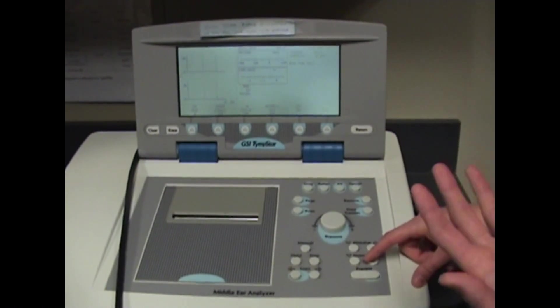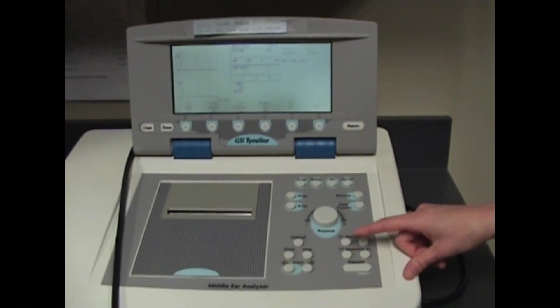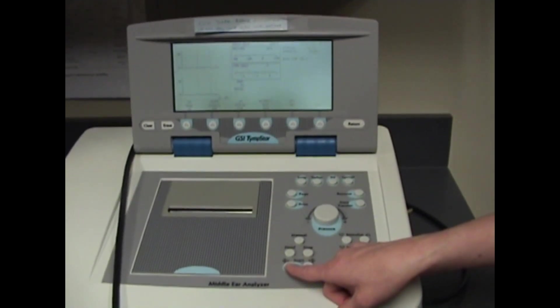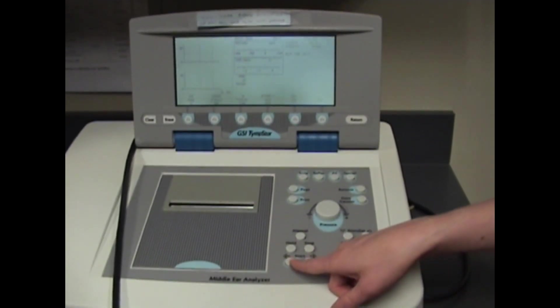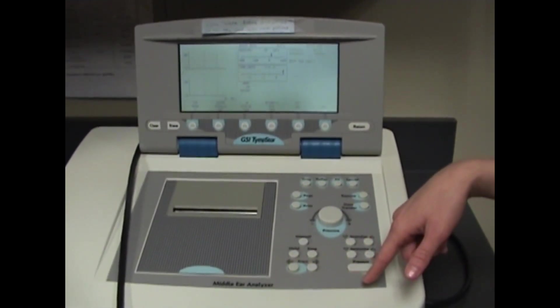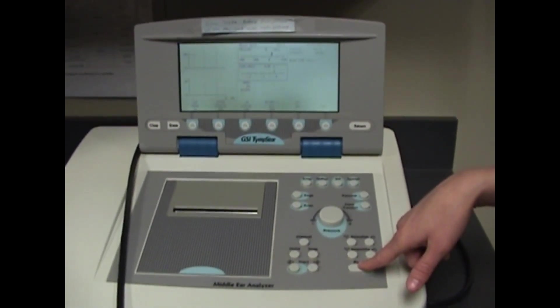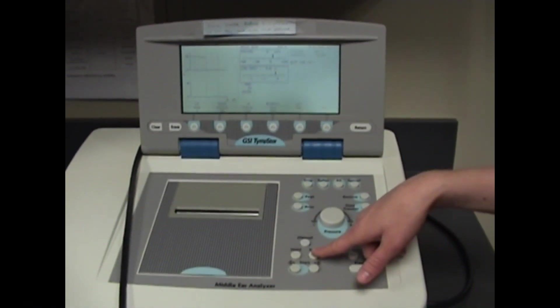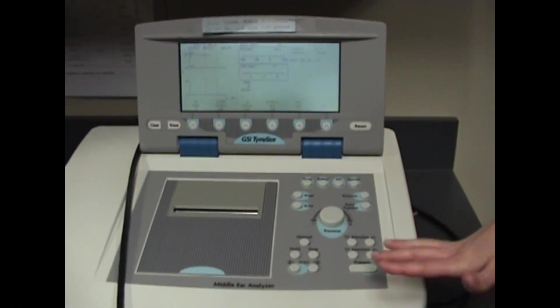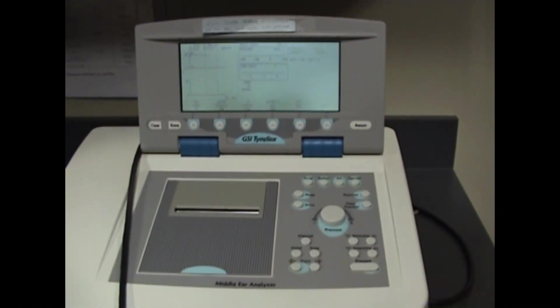The intensity you select will be 10 dB above whatever the threshold was. Let's say we got a reflex at 90 dBHL, so our intensity would be 100. You want to let the patient know this will be loud—they'll hear a loud sound for 10 seconds. Press start to put in the probe tone, then hit present. You'll see a tracing on screen for 10 seconds. Then press stop—it'll automatically stop at 10 seconds, but the stop button takes that probe tone out of their ear and closes out the test.